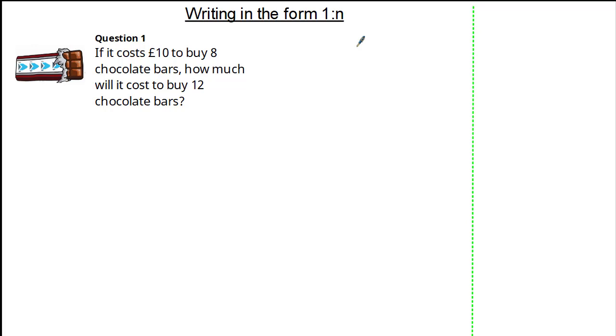So let's look at the principle behind it using chocolate. In this question it states if it costs £10 to buy 8 chocolate bars, how much will it cost to buy 12 chocolate bars? We now know 8 chocolate bars cost £10, so to work out 1 chocolate bar we simply divide by 8. However, because it's proportional we must also divide the £10 by 8, giving us the price of 1 chocolate bar being 10 divided by 8 is £1.25.